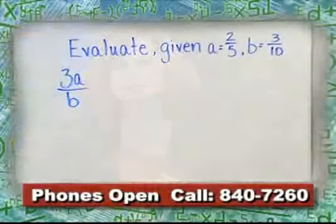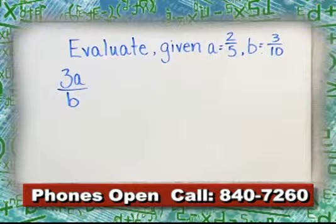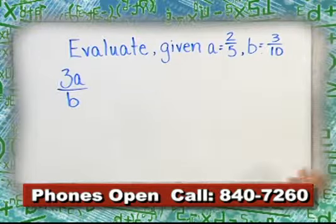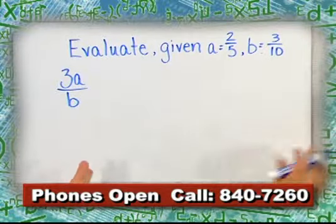We have another caller — Tyler, a student from a school in Brandon. His problem is: evaluate, given A equals two-fifths and B equals three-tenths, where three A is over B. Is that correct? Yes. One of my favorite topics is algebra. Do you understand what evaluate means? It basically means get the answer. They're giving you two values — A is two-fifths and B is three-tenths — and you're going to substitute those values in where they appear in the problem.